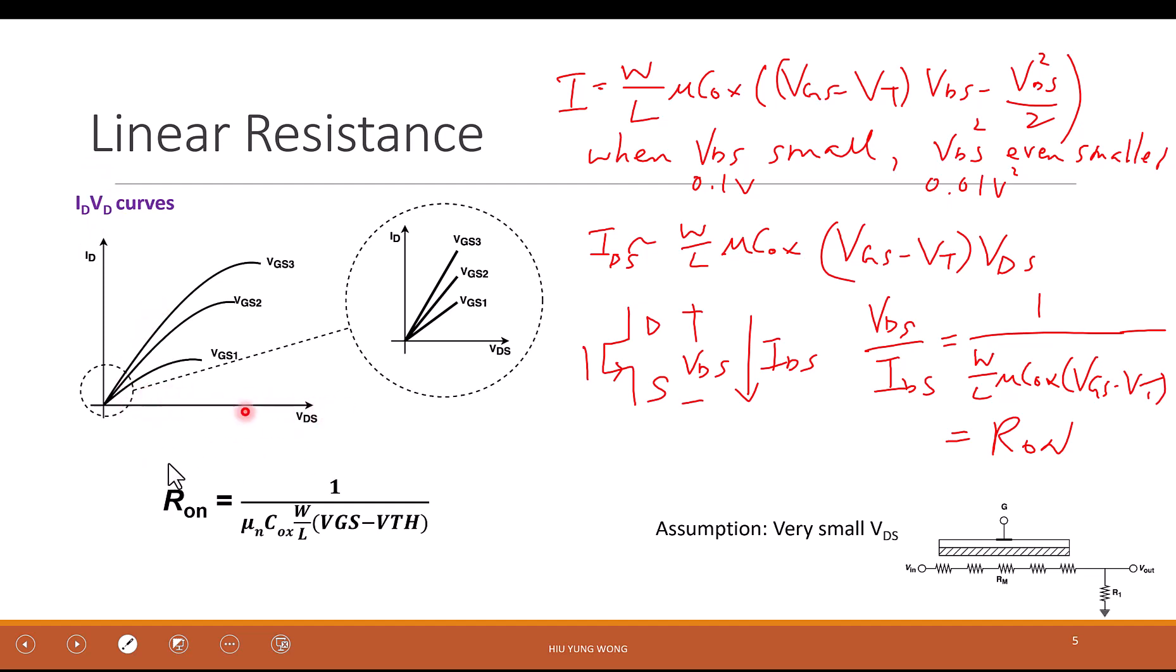You have learned the ID-VD curve before. If you forgot, basically what you say is, for a given Vds, what is the ID at different Vgs? For example, I bias the transistor at 1 volt, Vg equal to 1 volt. And then I start increase the Vds, the current will increase. For small Vds, you see that here is basically like a straight line. This is just like a resistor. Think about a resistor.